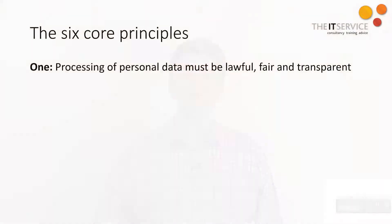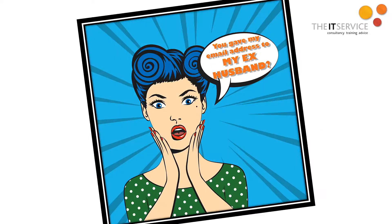Let's start with those principles. At the heart of the GDPR lie the six core principles in Article 5. They say that, one, your processing of personal data has to be lawful, fair and transparent. We'll come back to lawful in a minute. But in a nutshell, the concept of fair and transparent means that you shouldn't shock people by doing dodgy things with their data that they wouldn't be expecting you to do, and that people should know what's happening to their data.